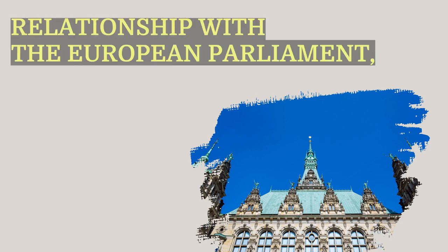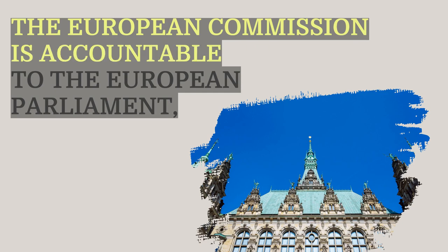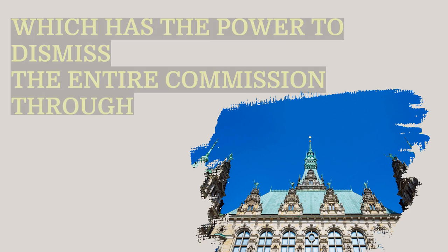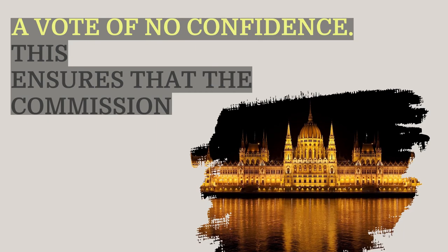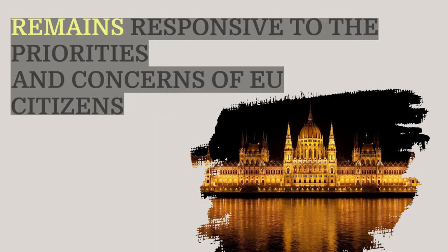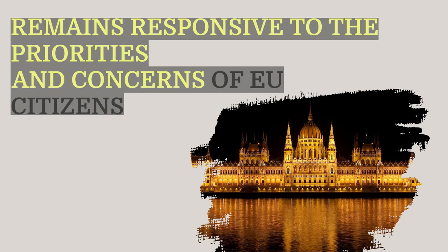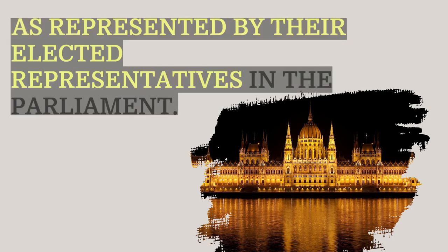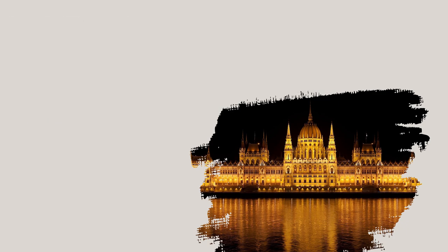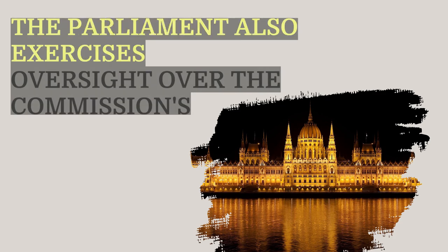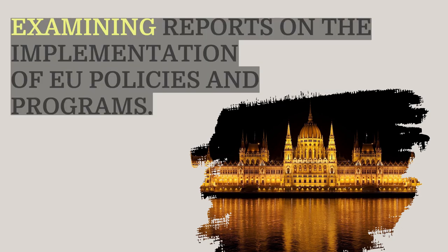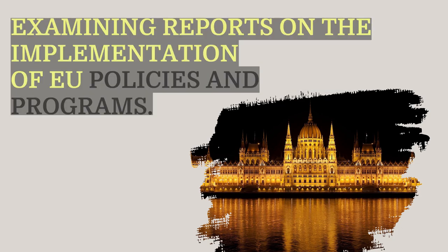The European Commission is accountable to the European Parliament, which has the power to dismiss the entire Commission through a vote of no confidence. This ensures that the Commission remains responsive to the priorities and concerns of EU citizens, as represented by their elected representatives. The Parliament also exercises oversight over the Commission's work through regular question-and-answer sessions and by examining reports on the implementation of EU policies and programs.